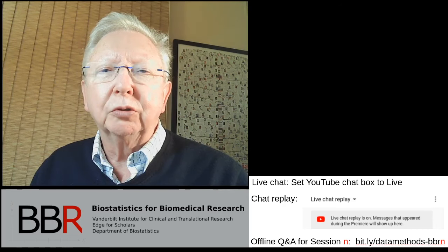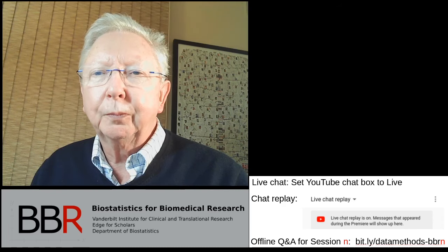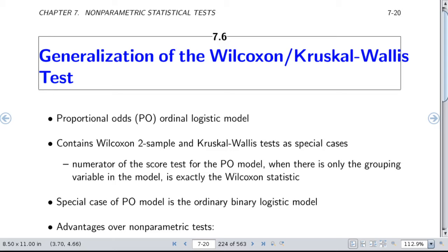Let's get started by going to our notes, dated January 22, 2020. Here we introduce the proportional odds model, which is a generalization of the Wilcoxon and Kruskal-Wallis tests. For something to be a generalization of a rank test, it must use only the ranks of the dependent variable, and that is indeed the case with the proportional odds model. The score test from a proportional odds model with just two groups is exactly the Wilcoxon statistic.